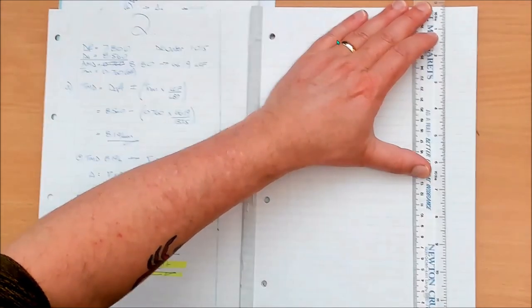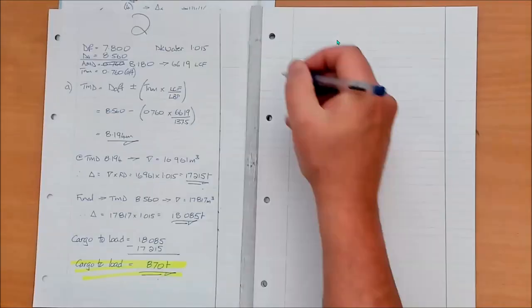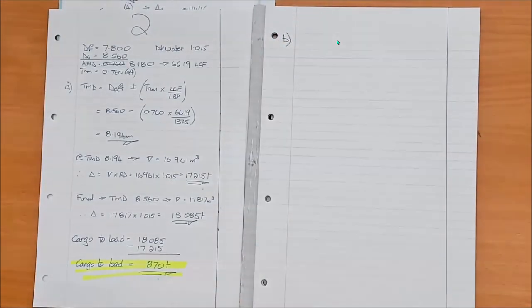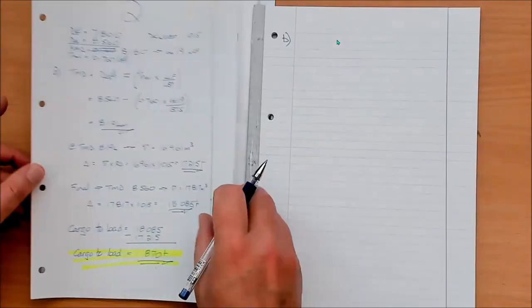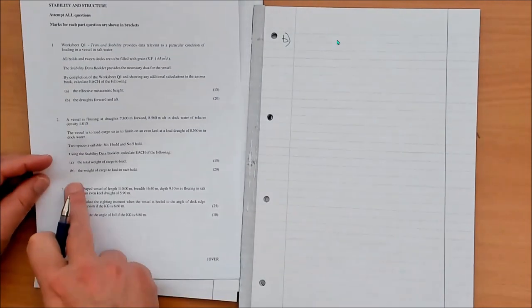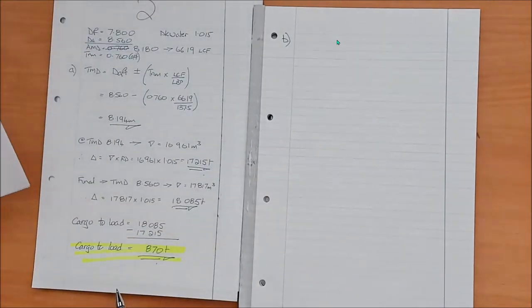You can always use it for rough work if you're worried about blank pages. Fine. Let's put Part B in the margin there. All right. So what do we want from Part B? Weight of cargo to load in each hold.